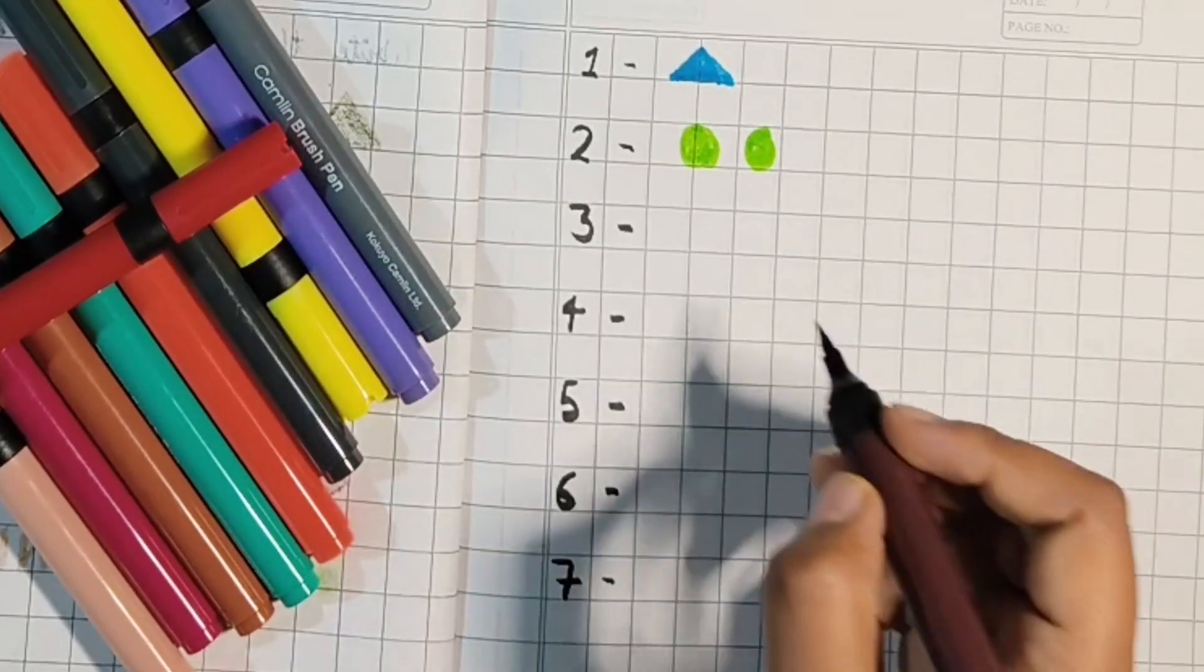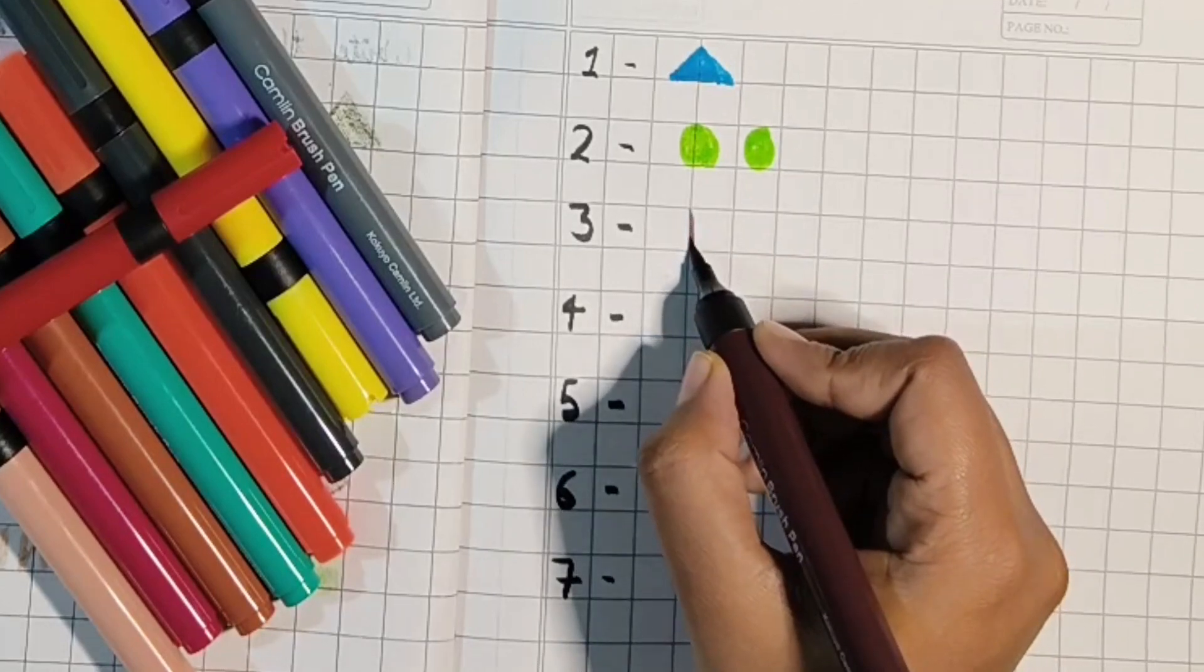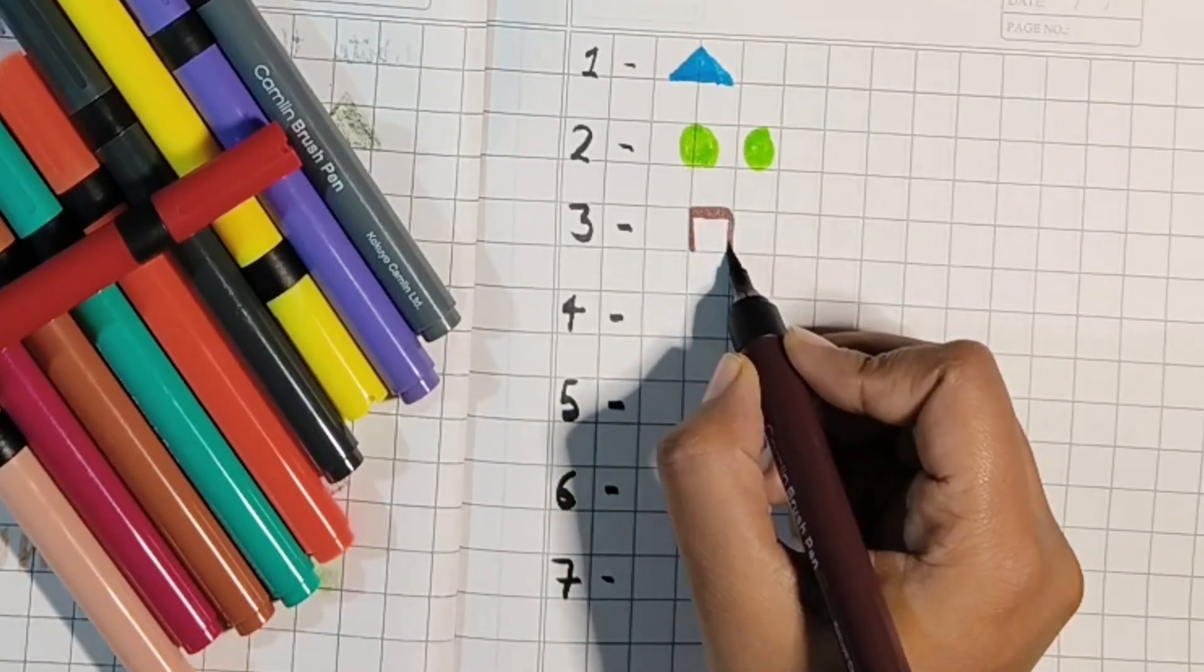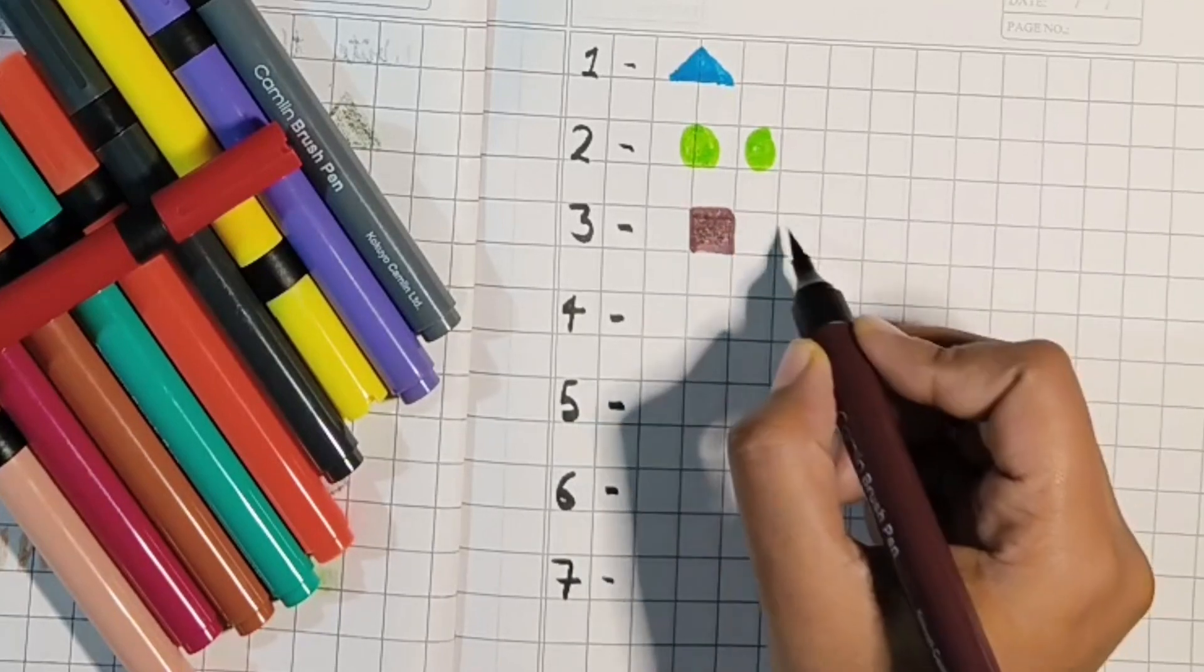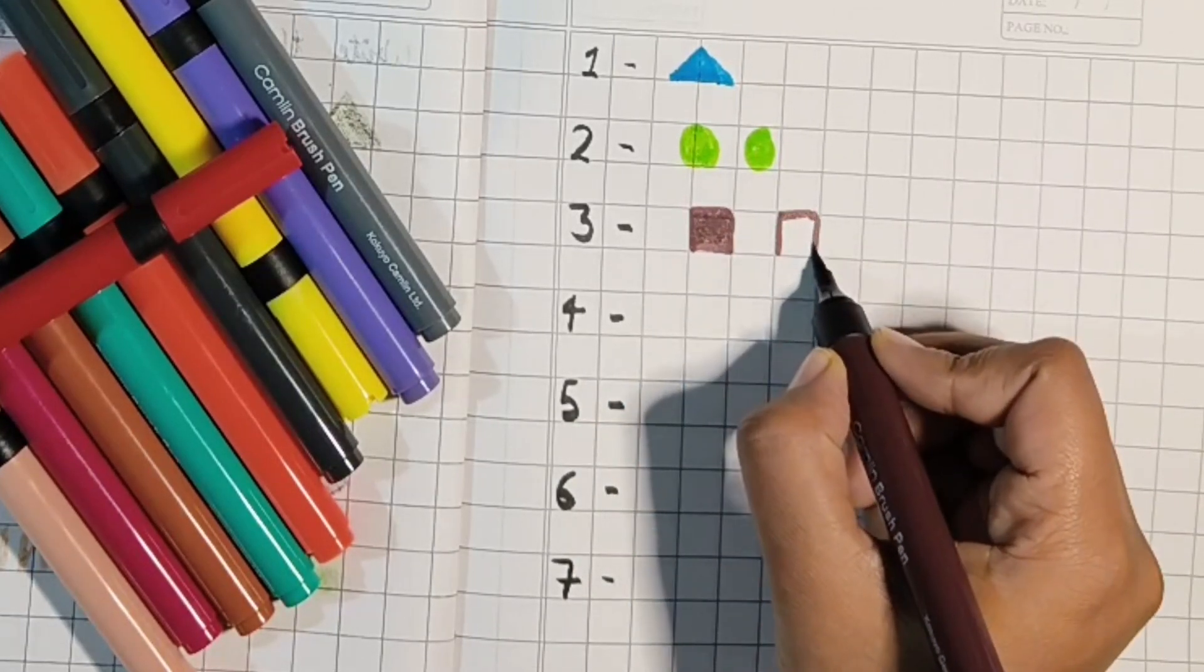For three, we will make three squares like this.